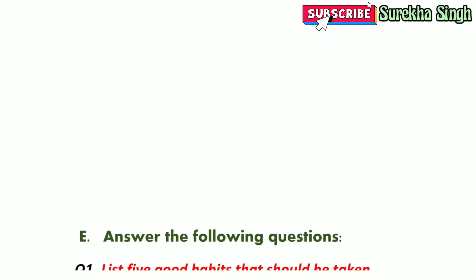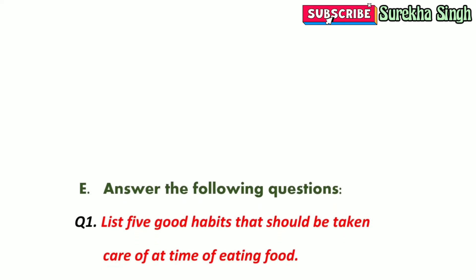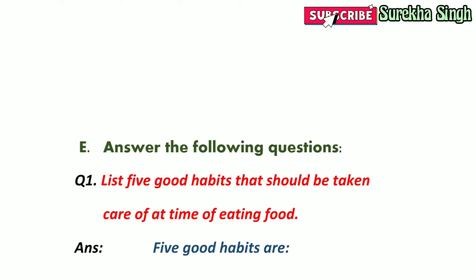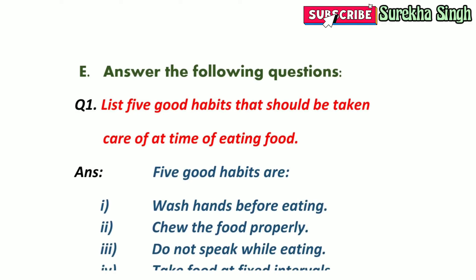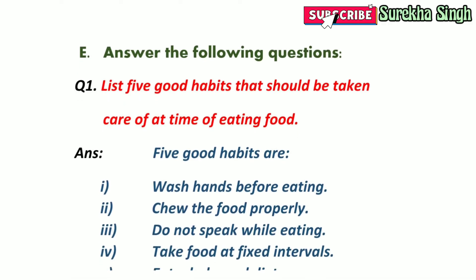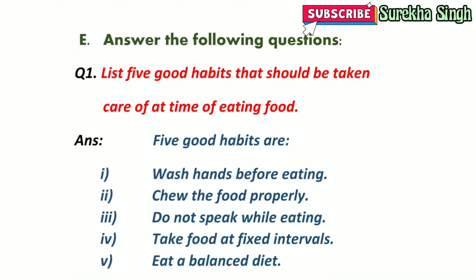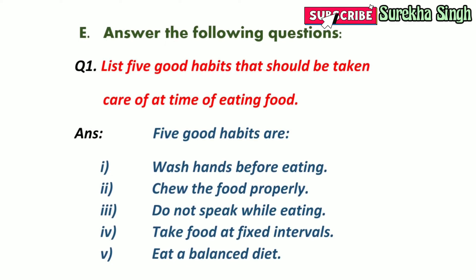Question E: Answer the following questions. 1. List 5 good habits that should be taken care of at the time of eating food. Following are the 5 good habits: 1. We should wash hands before eating. 2. We should chew the food properly. 3. We should not speak while eating. 4. We should take food at fixed intervals. 5. We should always take a balanced diet.